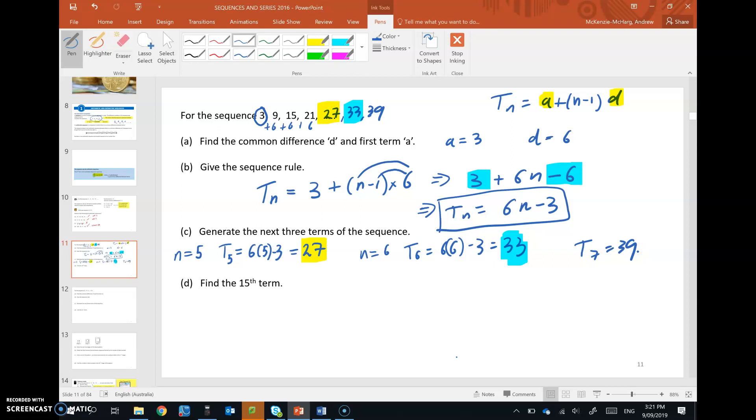Let's not count up one certain term at a time to the 15th term. Let's go straight to it. So we're going to put n equals 15 into the equation. So t15 equals 6 by 15 take 3. 6 by 15 is 90, take 3, 87. So the 15th term in this sequence is 87. Go ahead and check the description for the video for the questions that you need to try on arithmetic sequences.